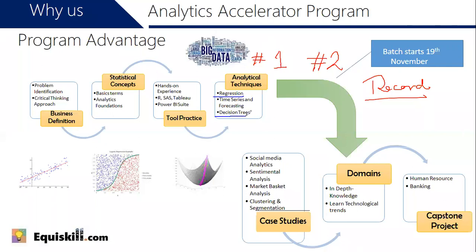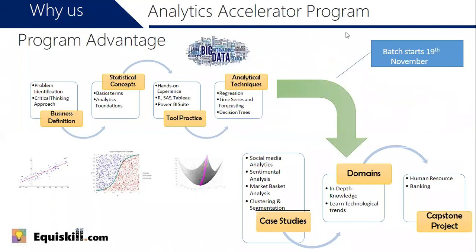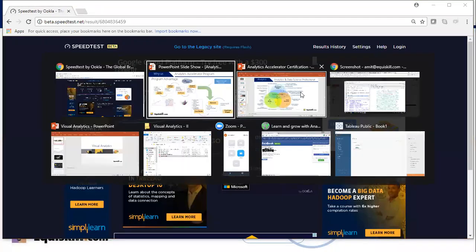The program runs 16 classes total — today is class one, tomorrow is class two, then Saturday and Sunday classes each week. Every class is recorded, and the program is modular — missing the regression class doesn't impact how you learn decision trees. With the Flexi Pass, you can attend the same class live in the next batch if you miss one. The program has a 4.9 out of 5 rating on Facebook.